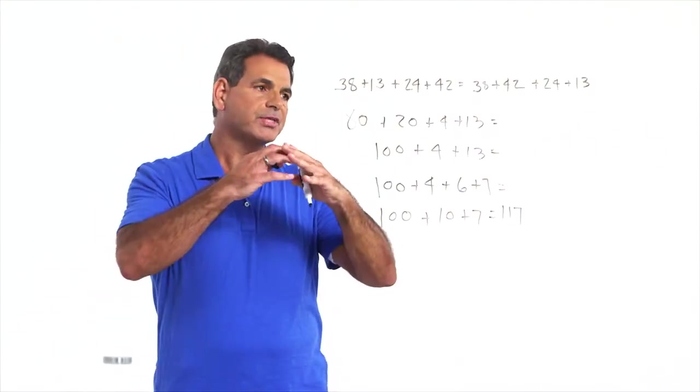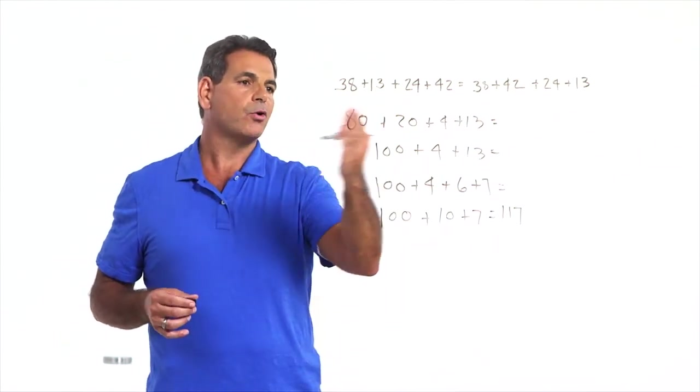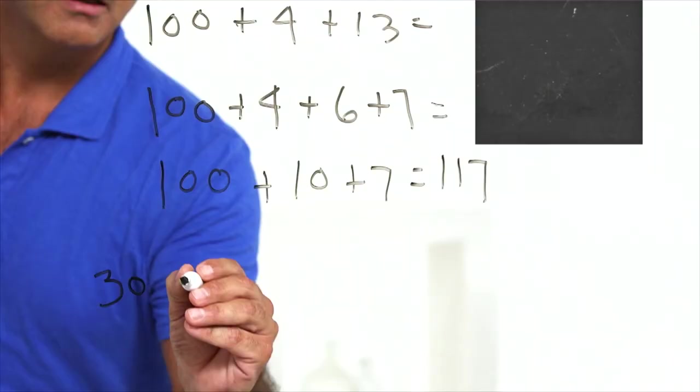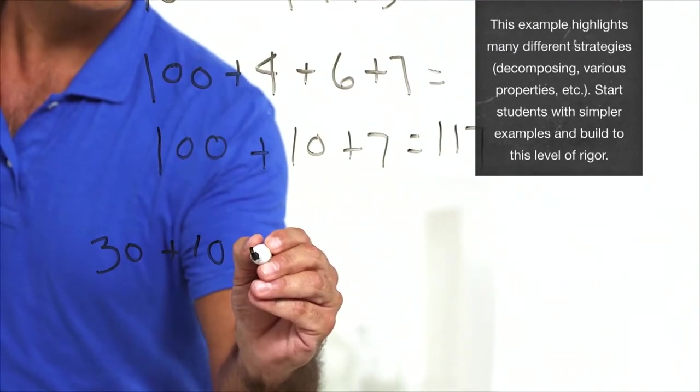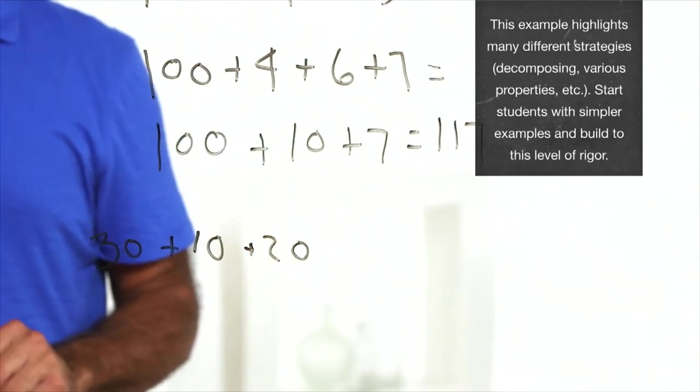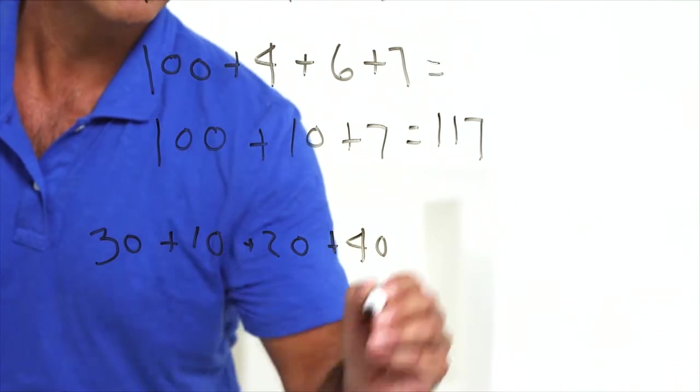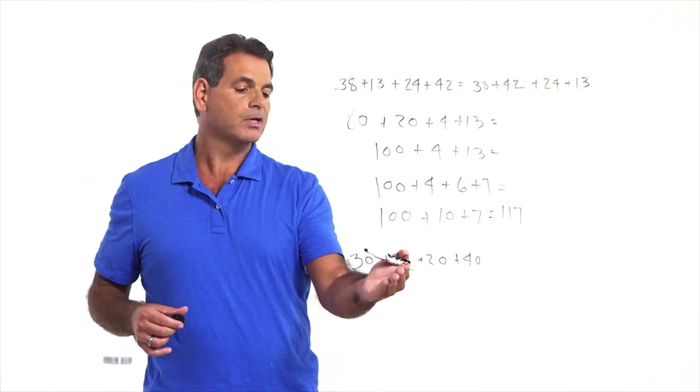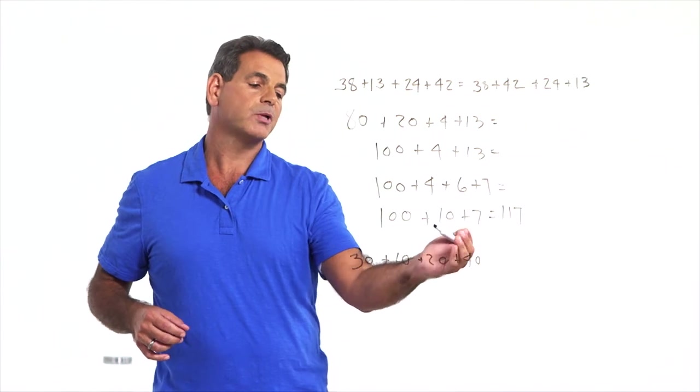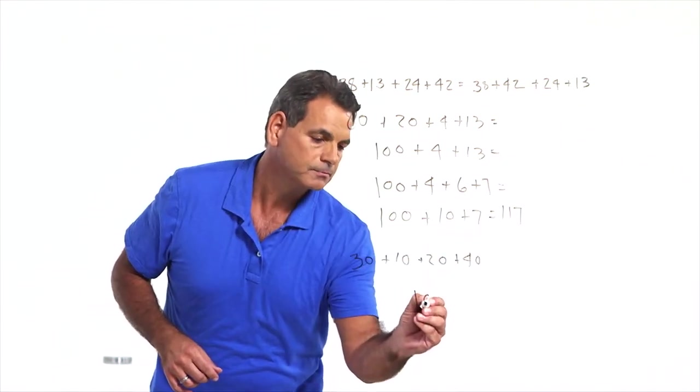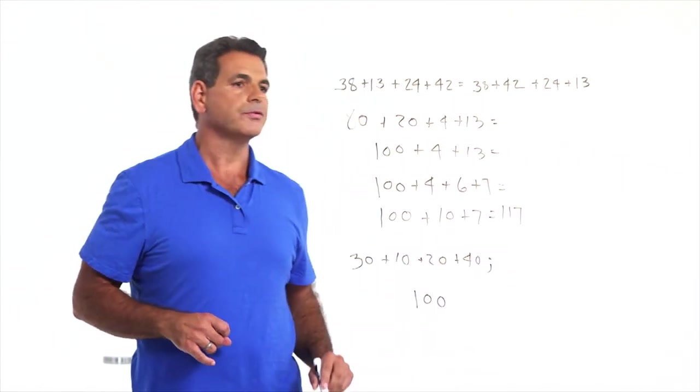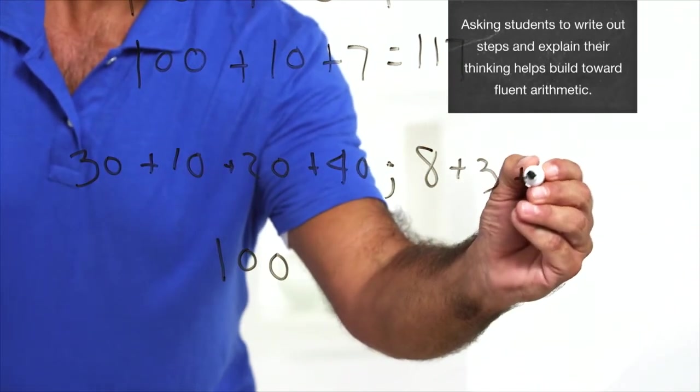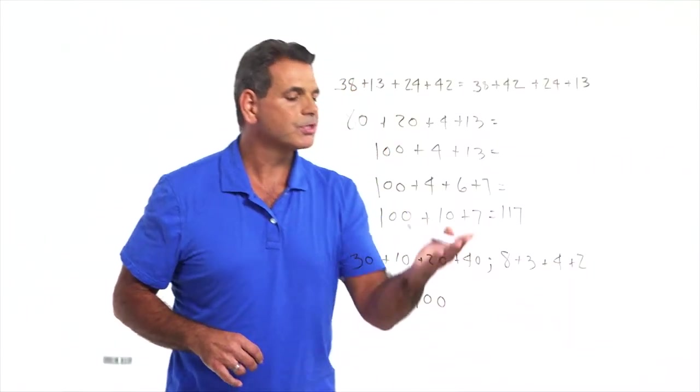Using place value knowledge, they can just take these numbers apart. So, let's use the original. We can look at all the 10s and then look at all the 1s. We have 3 tens in 38 plus 1 ten in 13 plus 2 tens in 24 plus 4 tens in 42. So, let's add up the 10s. It's single digits now.